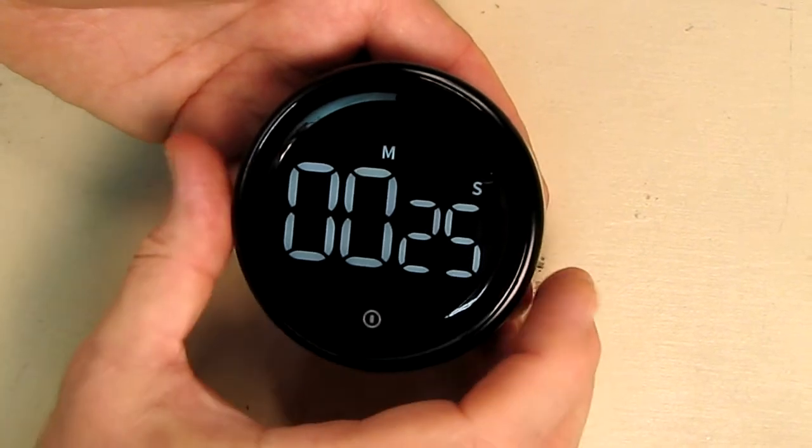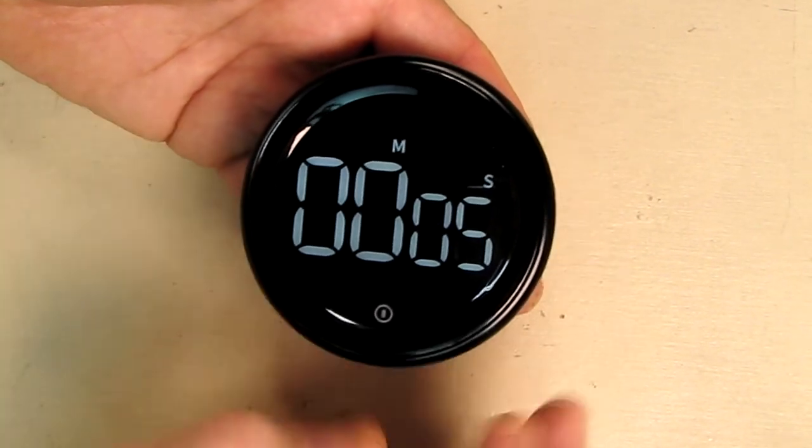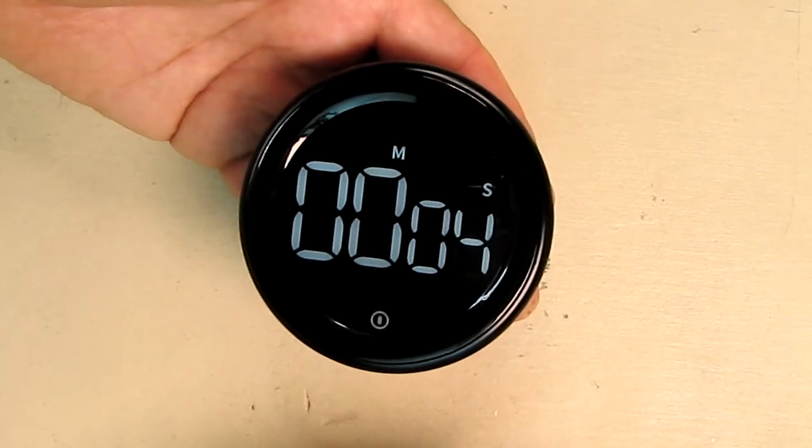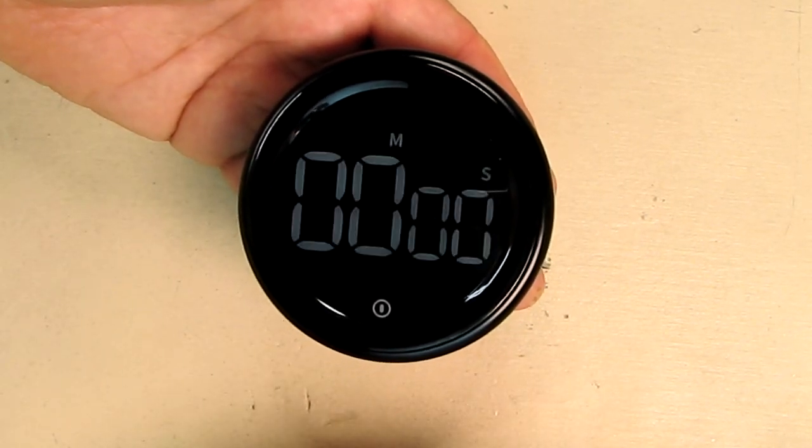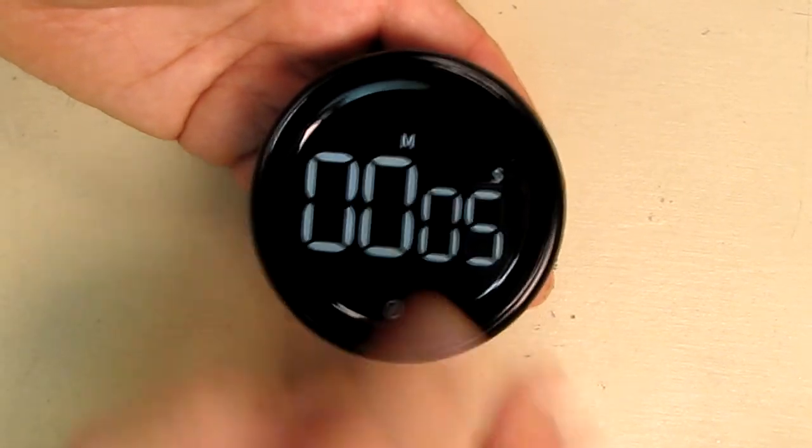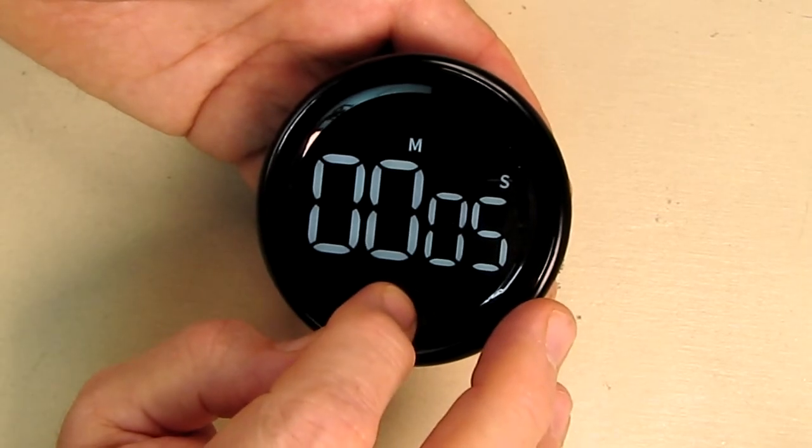Now let's put a shorter time on there so we can hear the timer. Let's just put a couple seconds. And it blinks. And you just hit this to clear it out. That clears the alarm. Now let's clear the display again.